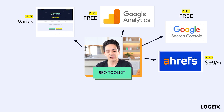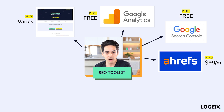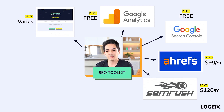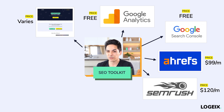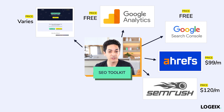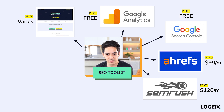Beyond that, you're going to need something like Ahrefs to analyze the backlink profile. A great alternative is SEMrush, which also handles organic keyword research. Ahrefs and SEMrush both do essentially the same things — Ahrefs is probably better on backlinks, and SEMrush is a little better on organic keyword research. Both are pretty good, so just pick one depending on which seems more appealing to you.